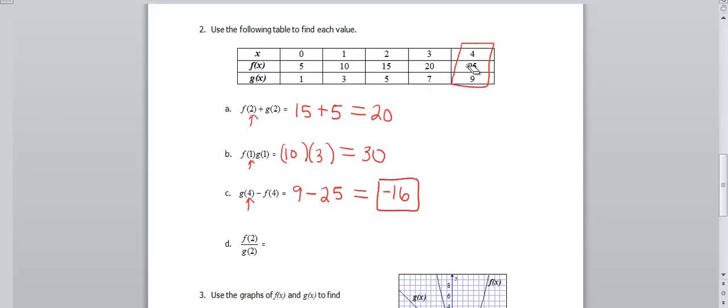Then the last problem here is a division problem. And this time our input values are 2. So we're going to have to go back to our 2 column and pick those values out. And f(2) is in the numerator, so that's going to be 15 divided by g(2) is in the denominator. That's 5, which is not 0, so this division is possible. And when we divide 15 by 5, we get a grand total of 3. So these problems look a little bit different, but they run pretty much the same way. You just have to know which column you're picking information off of the table and go from there.